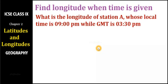We are on the topic of calculation of longitude and time. In the last video we saw how to find the time of a place if you know the longitude. Today we will see how to find the longitude of a place if you know the time. The question is: what is the longitude of station A whose local time is 9 p.m., while GMT is 3:30 p.m.?